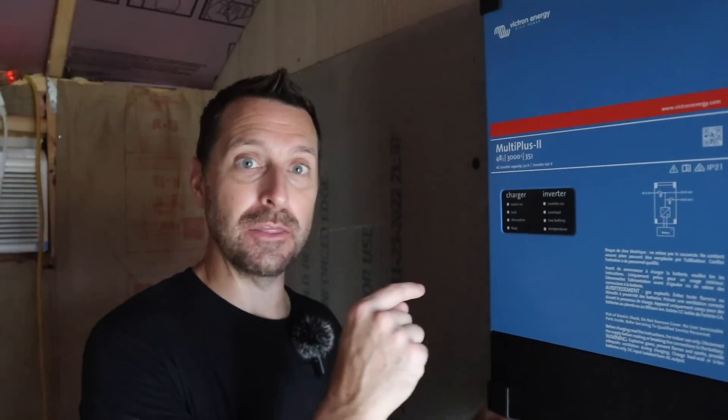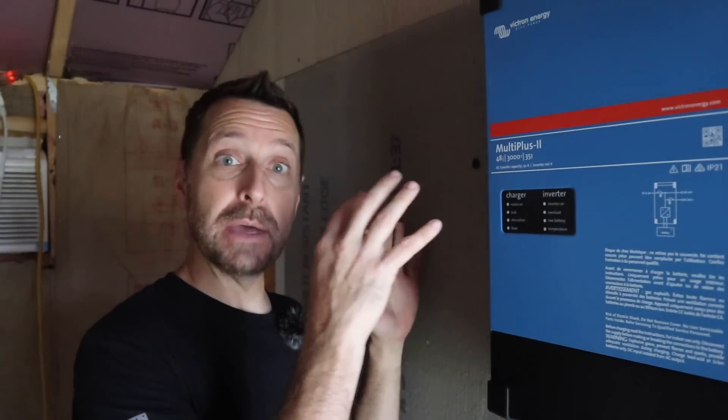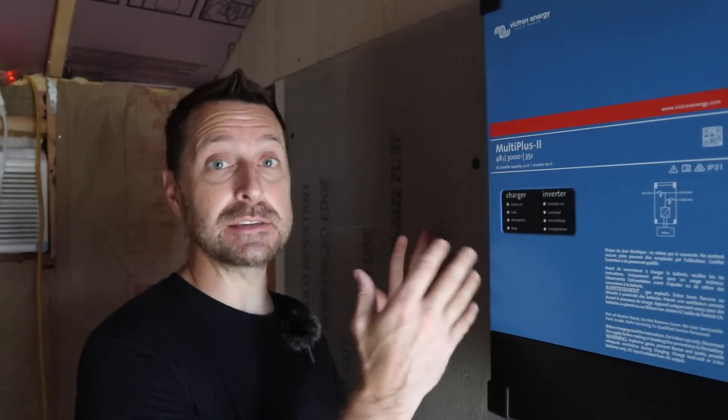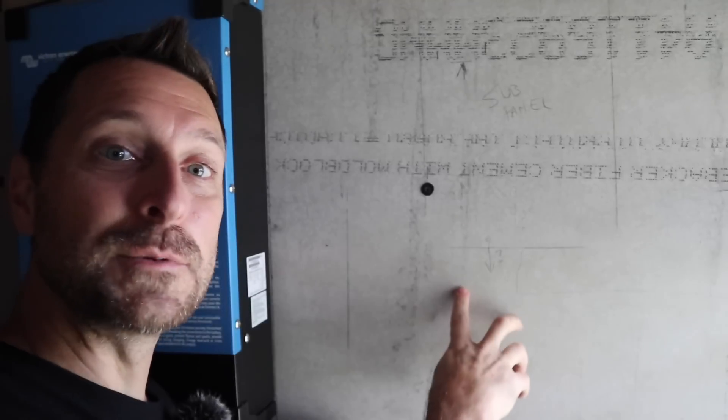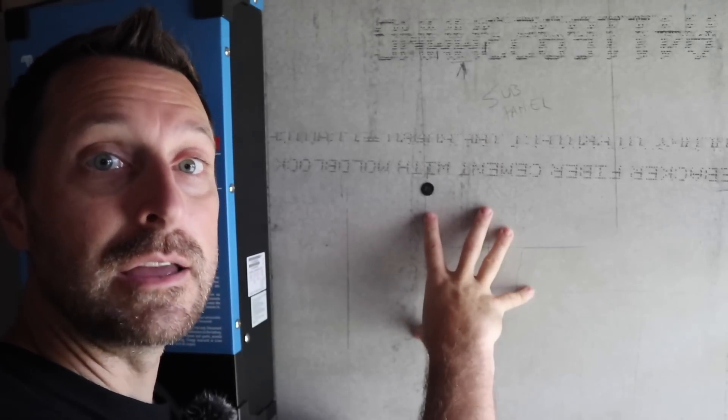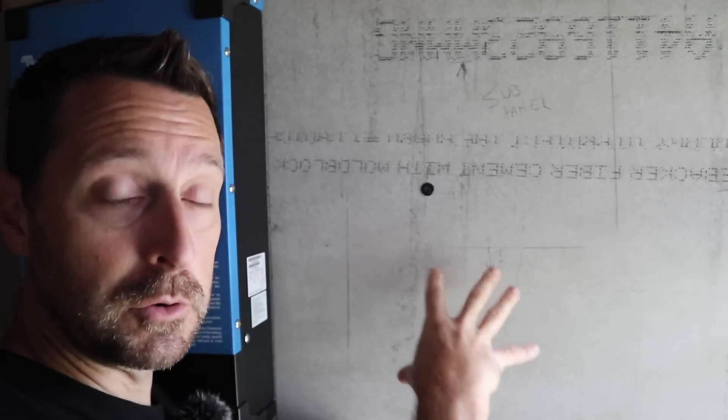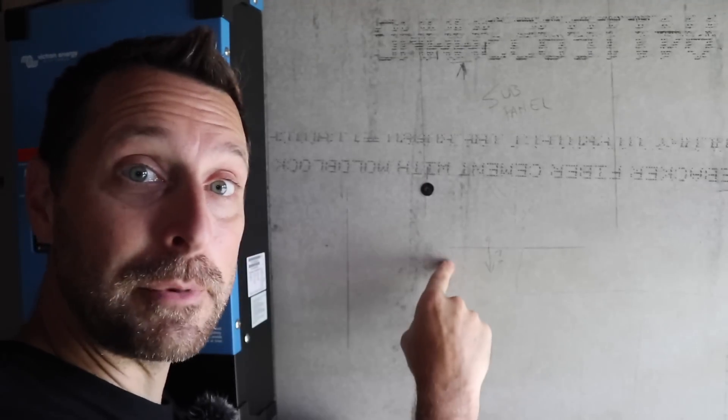We've already got one of our multi plus twos mounted here on the wall. Now it's important to measure everything out and to give it the proper spacing per the manufacturer's instructions. On this wall, I've attached hardy backer, which is a non-flammable surface, which you need to mount solar equipment on.